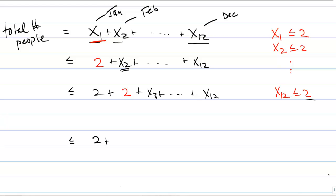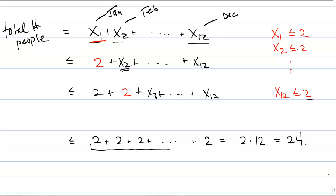At the end, we have a sum of 12 twos in a row, which equals 2 times 12, giving a value of 24. The final expression, which equals 24, is at least as large as the original sum, because in each substitution the value of the expression is either staying the same or getting larger. So the final expression is greater than or equal to the original expression.